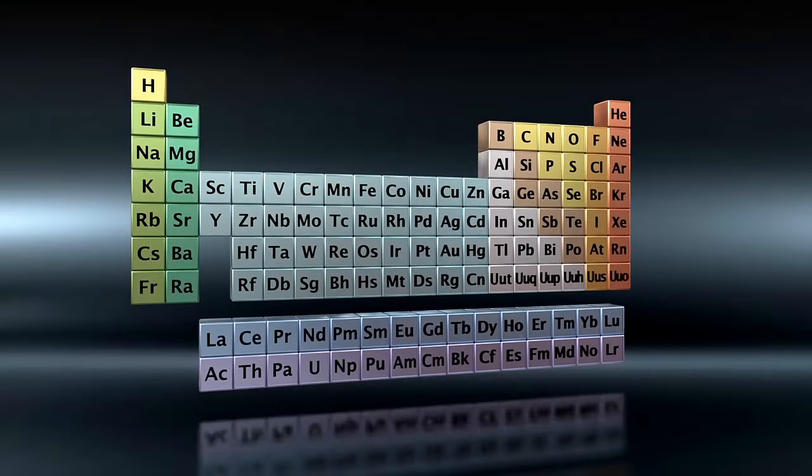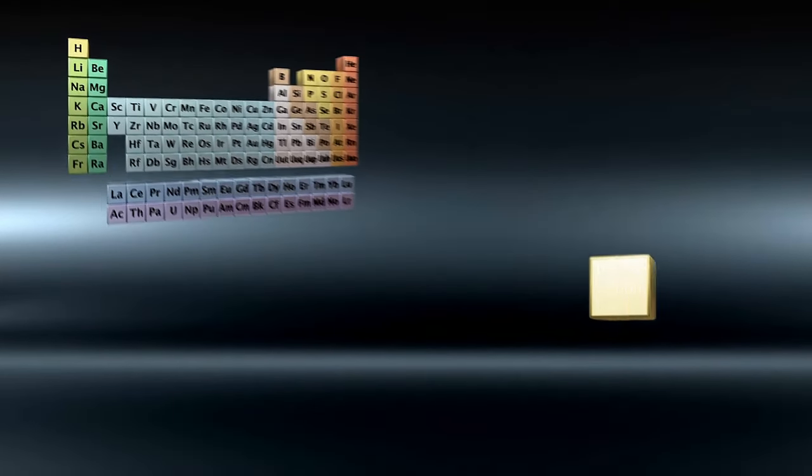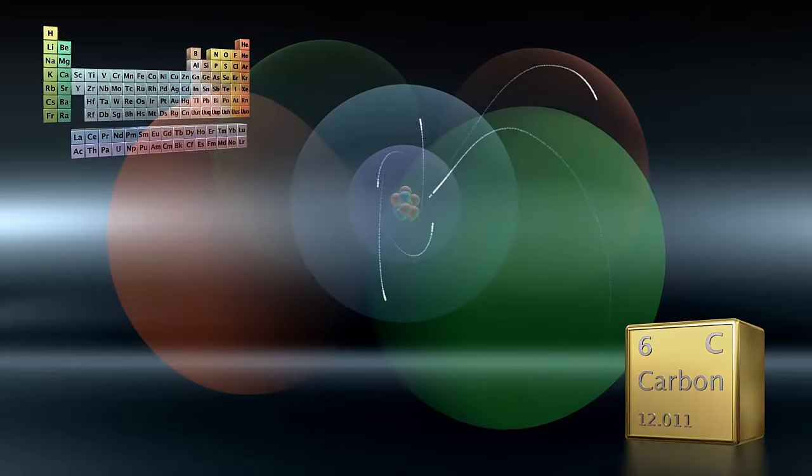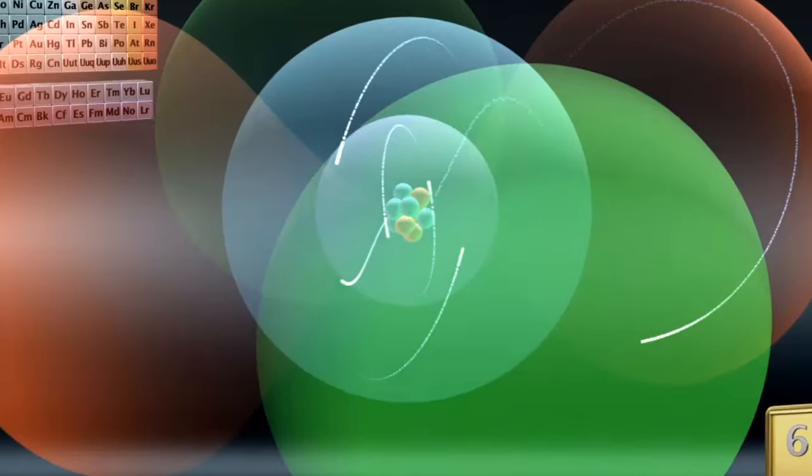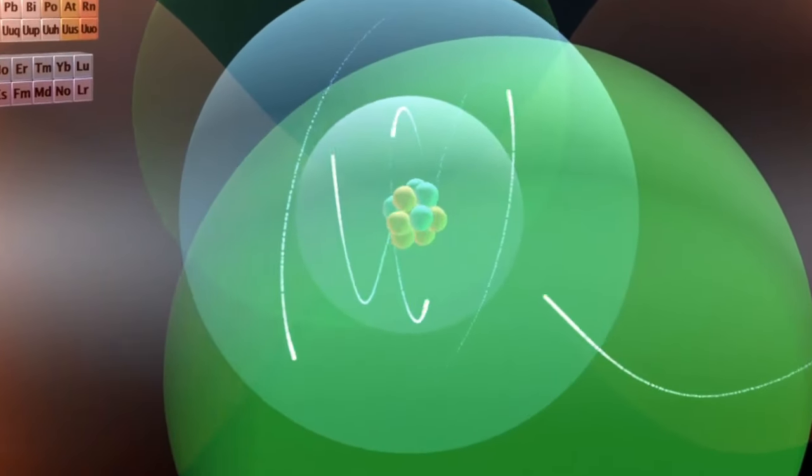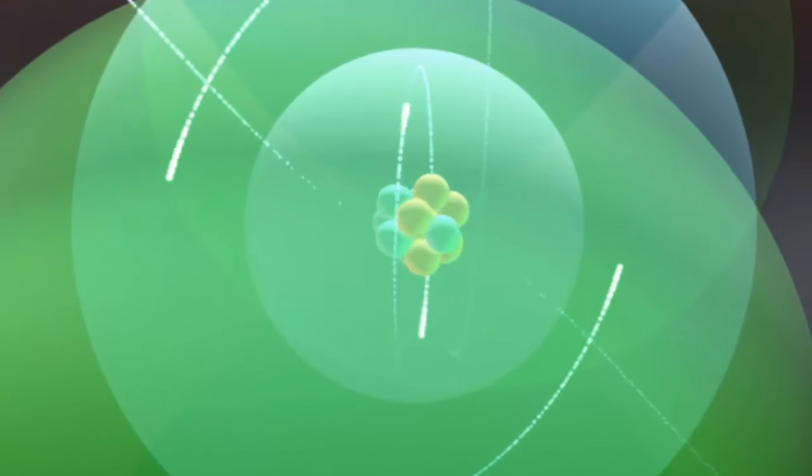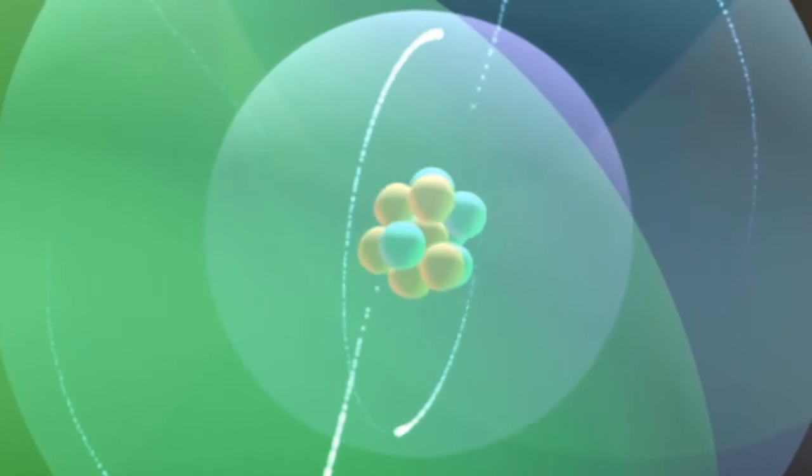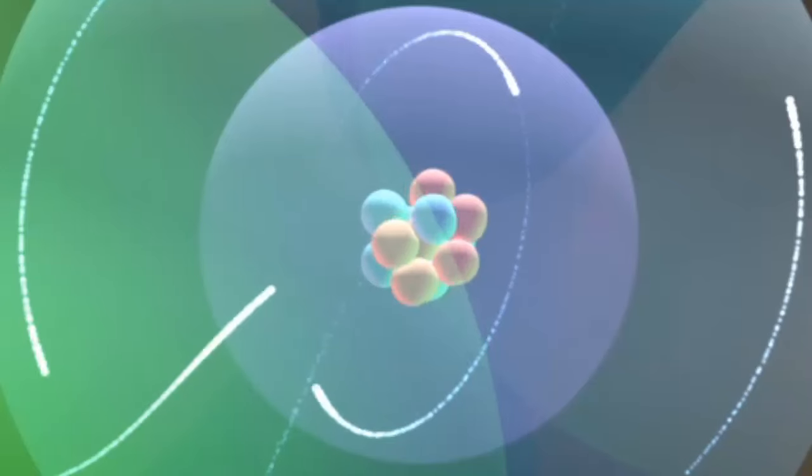By now scientists had a fuller picture of how atoms were made. They had a nucleus consisting of positively charged protons and neutral neutrons at their center, and this was responsible for most of their mass. Light negatively charged electrons whizzed around the outside of the nuclei, in fact at about three-quarters of the speed of light, and gave atoms most of their size.